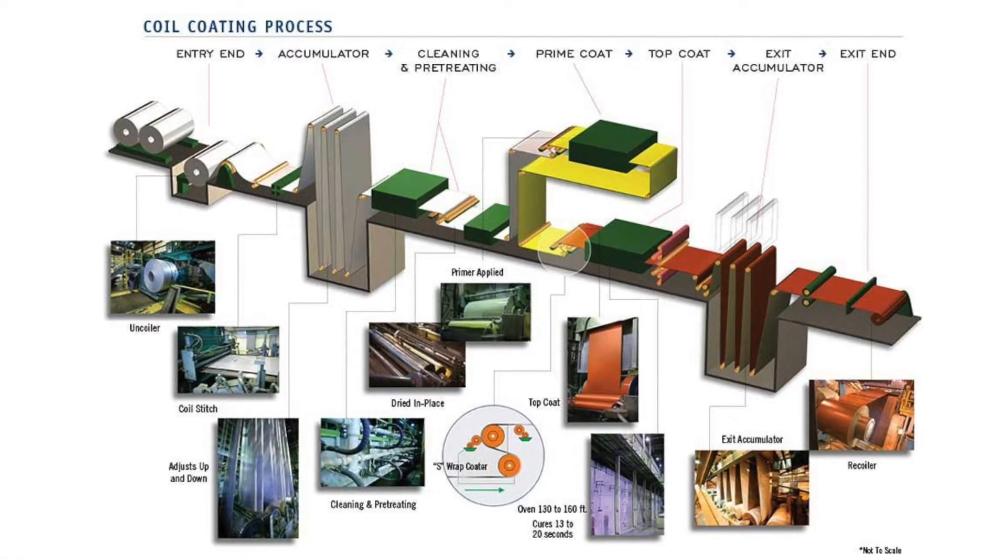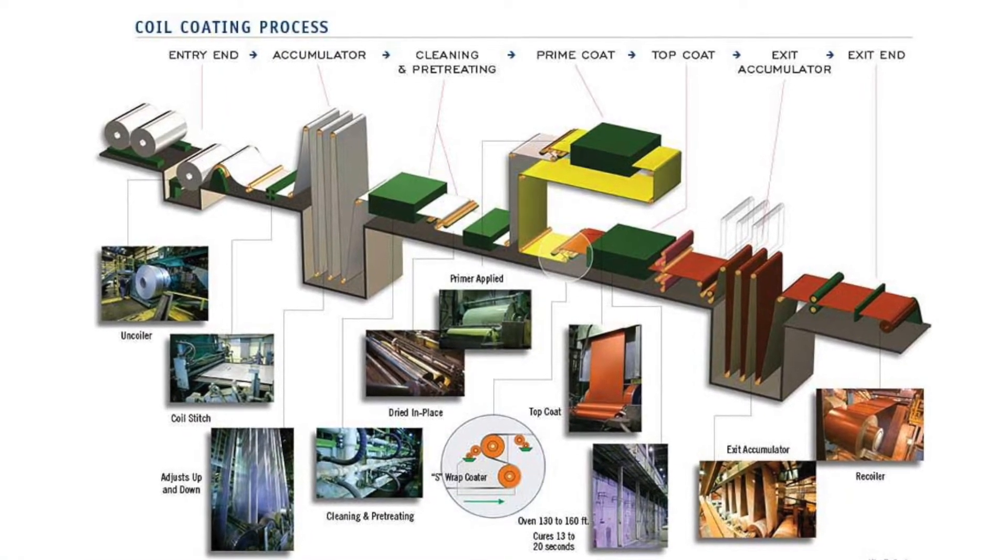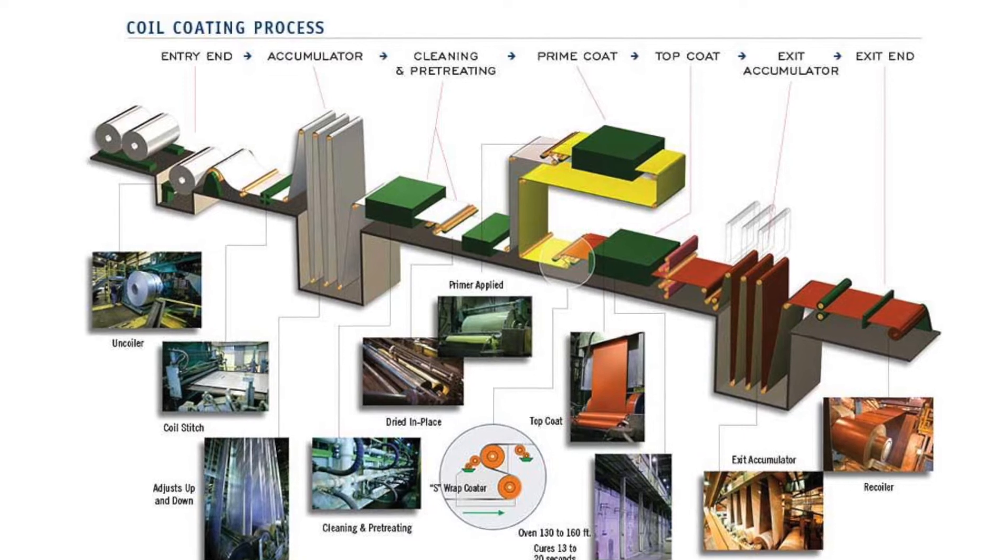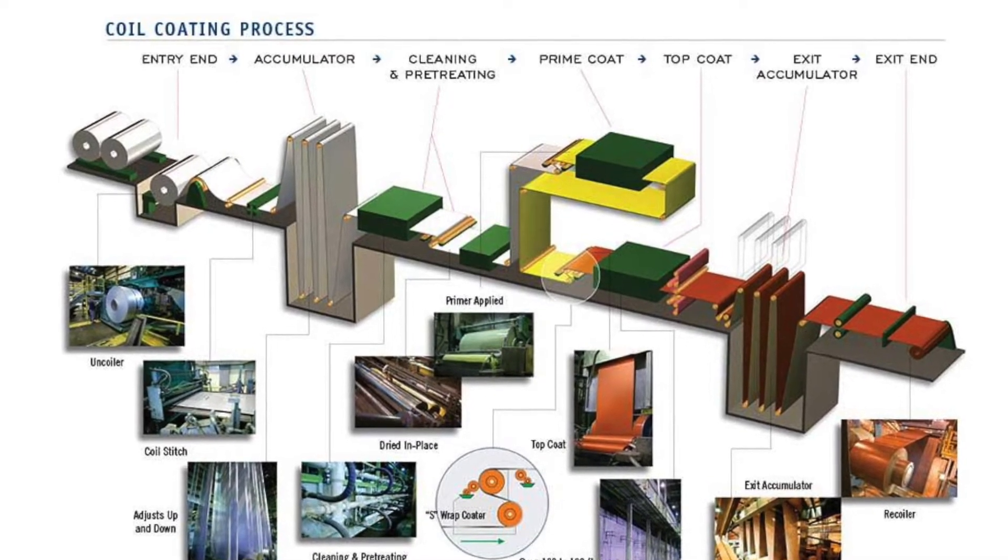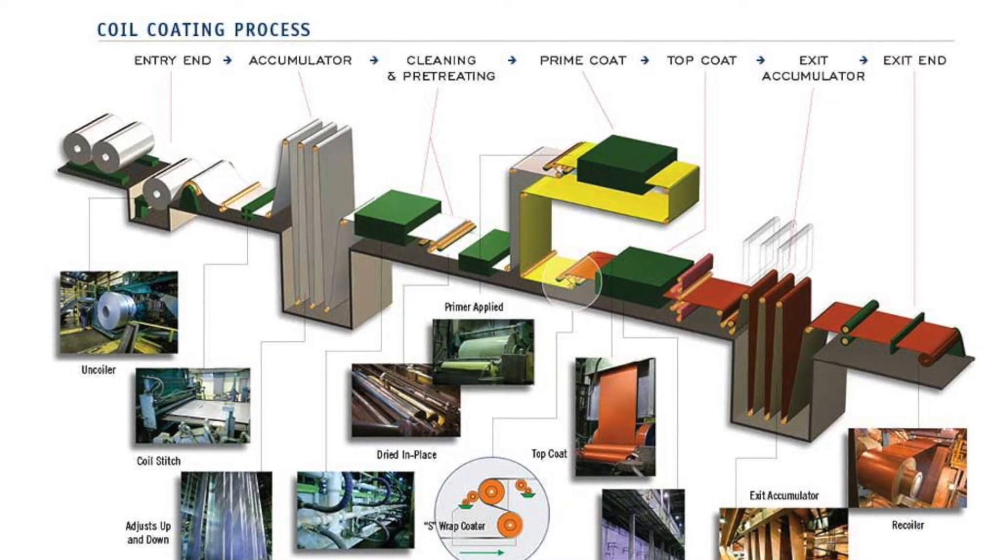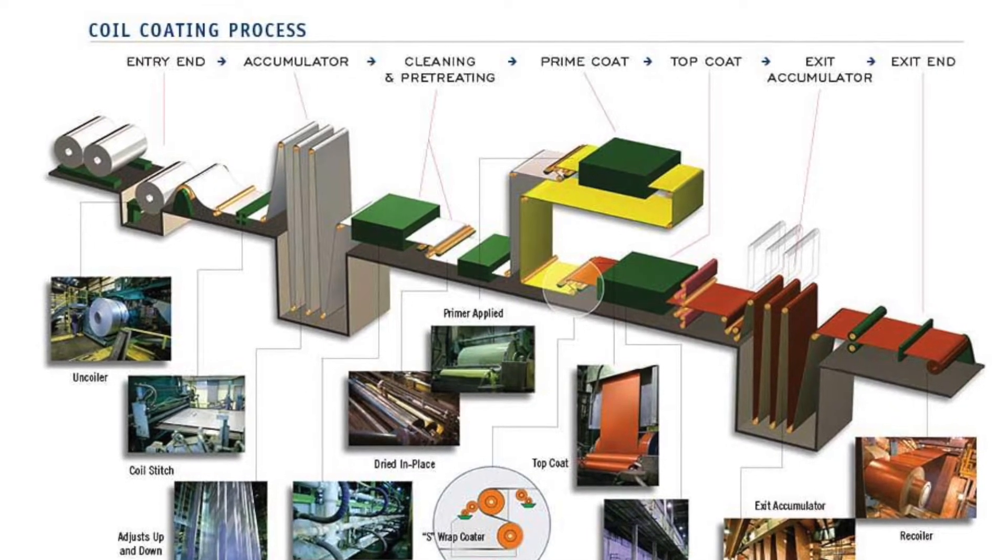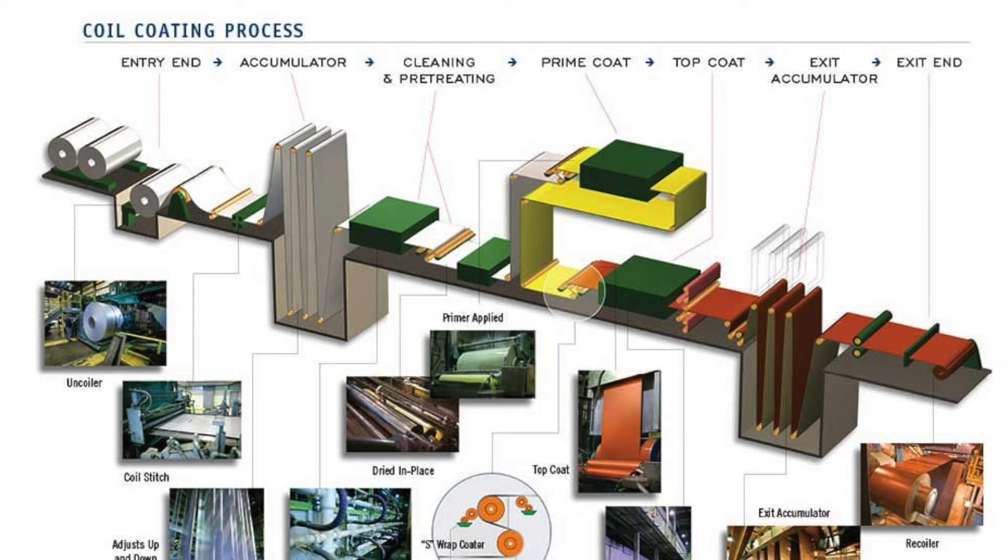Most coil coatings chemically change during the curing process. This change is commonly referred to as cross-linking, and coil coatings such as epoxies, polyesters, and urethanes become more resistant to solvents as they cure and cross-link. This resistance to solvent is an indication of the degree of cross-linking.